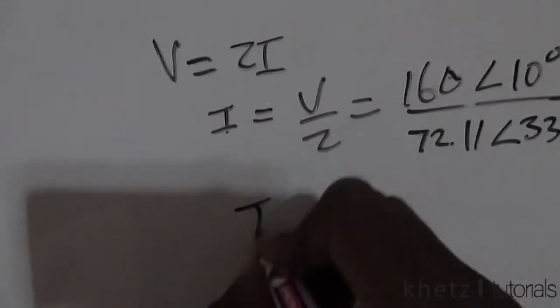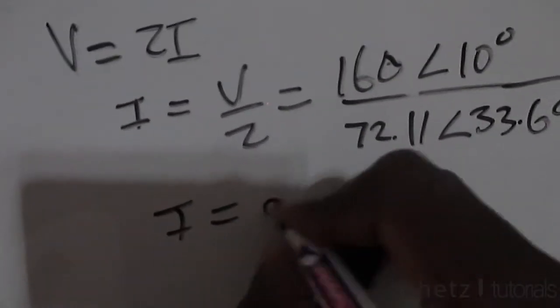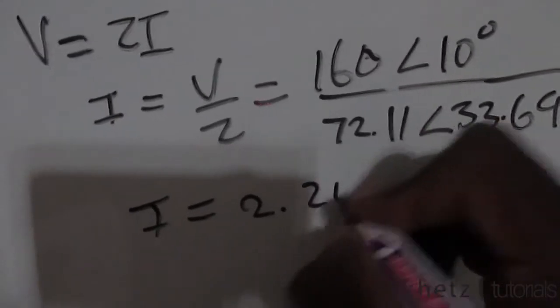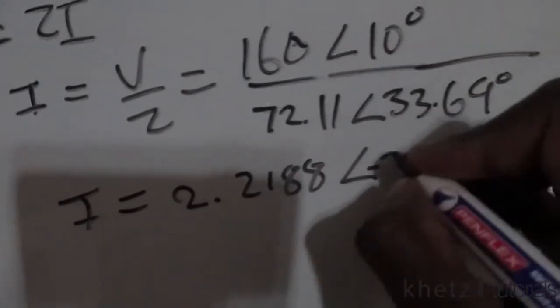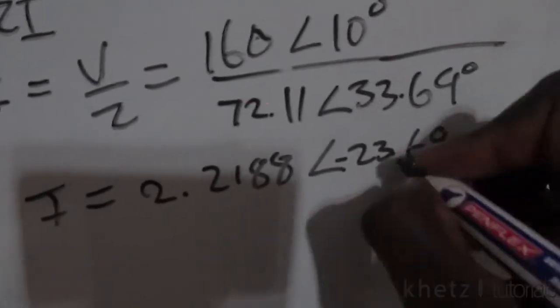From here we're going to get an I of 2.2188 with an angle of negative 23.69 degrees.